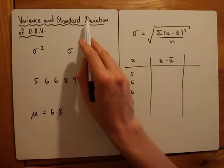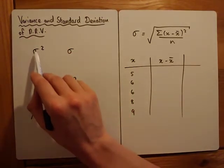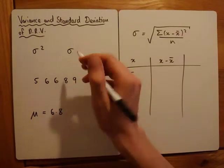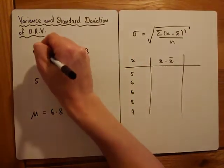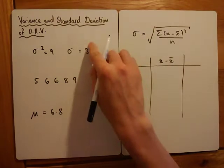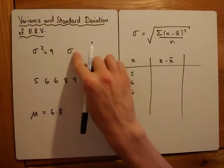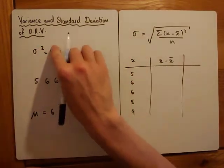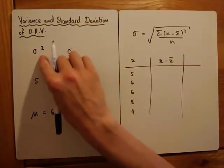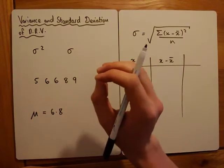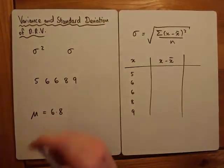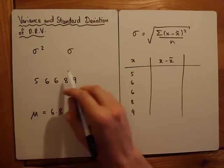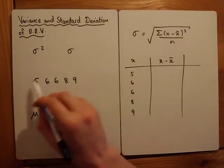Sigma stands for the standard deviation and the variance is sigma squared. So if the standard deviation was three, the variance would be nine, and if I knew the variance was nine I'd know the standard deviation is three — not minus three, because you can't have a negative spread. This just represents how spread out the data is.